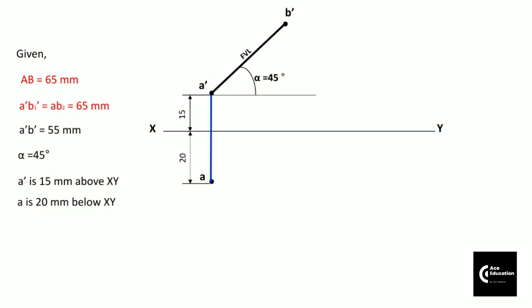And once you get point B', you can draw its projector line vertically downwards, because point B is coming on the same projector line itself. You are also getting the locus of point B', where you can mark the true length in front view.